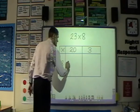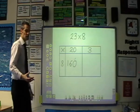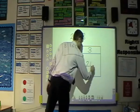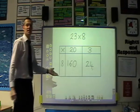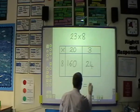So 20 times 8 is 160 because the children should know 8 times 2 is 16, and 8 times 3 is 24. They can in most cases then add that up in their head giving a total of 184.